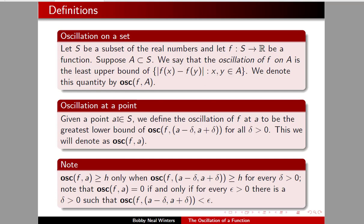To get the oscillation at a particular point: take a element of the set S, and define the oscillation of f at a to be the greatest lower bound of the oscillation of f on the open interval (a - δ, a + δ) for every δ > 0. We use the same notation, just replacing the set with the point. So on a set it's the biggest the values can get apart, but at a point it's the smallest as we vary δ and let δ get small — it's an oscillation, a big-small, so it sort of works.